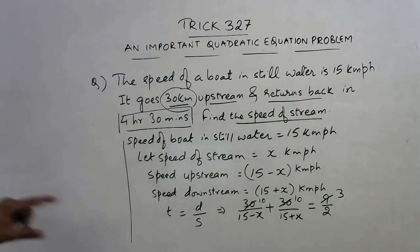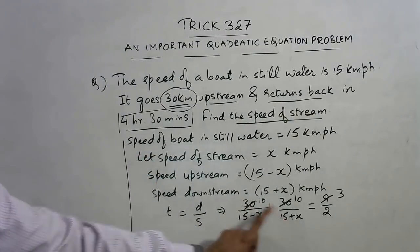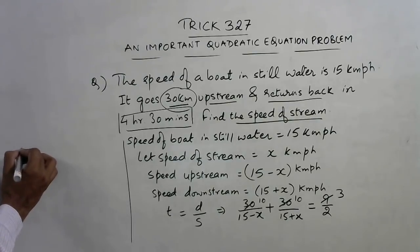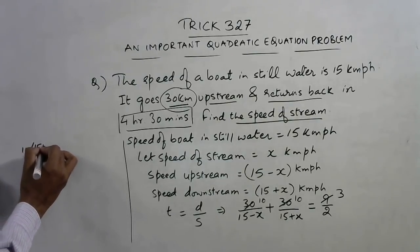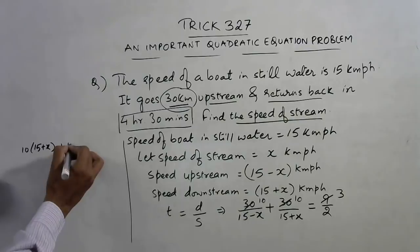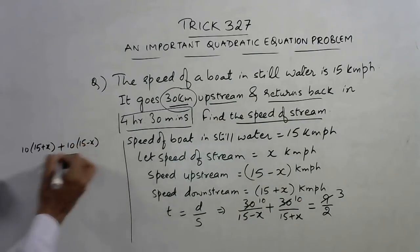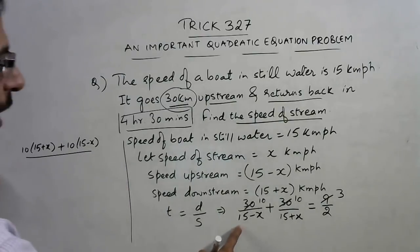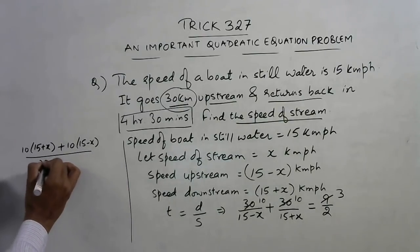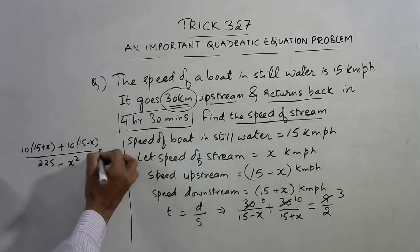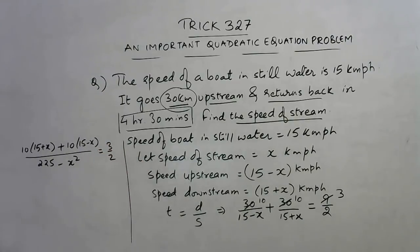Just cross multiply here: 10 and 15 plus x, plus 10 and 15 minus x. If you apply the identity (a minus b)(a plus b), it is a square minus b square, and this equals 3 by 2. So now if you open this...